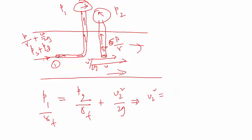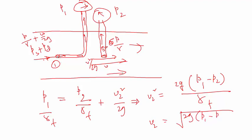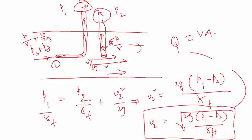So that would be 2g times P1 minus P2 divided by gamma of the fluid. So the velocity will be square root of 2g P1 minus P2 divided by gamma of the fluid. So now we know the velocity, we can calculate the flow rate.